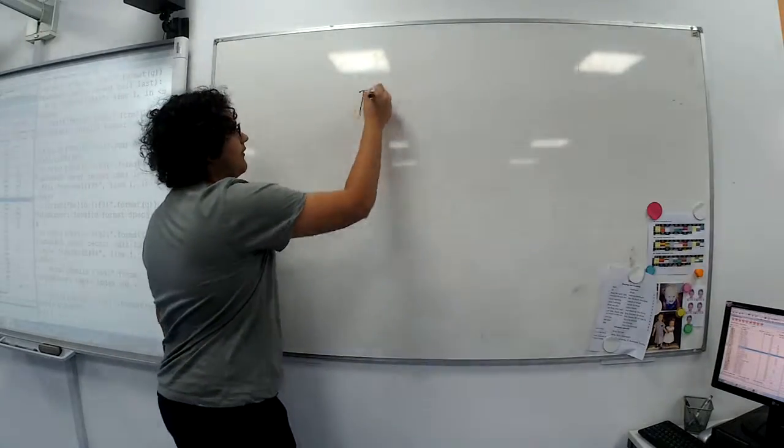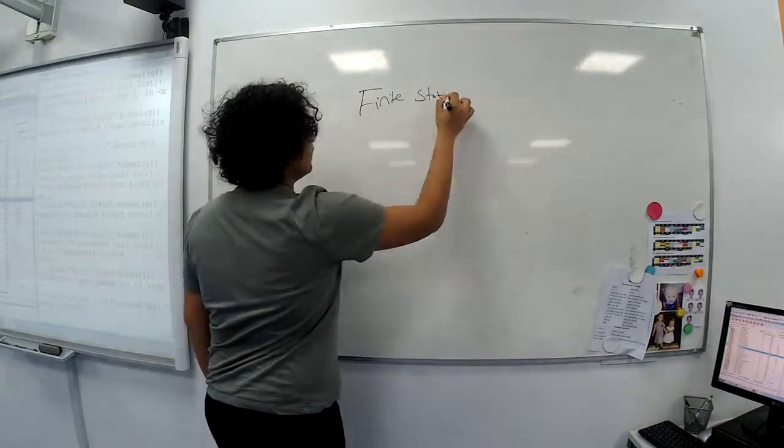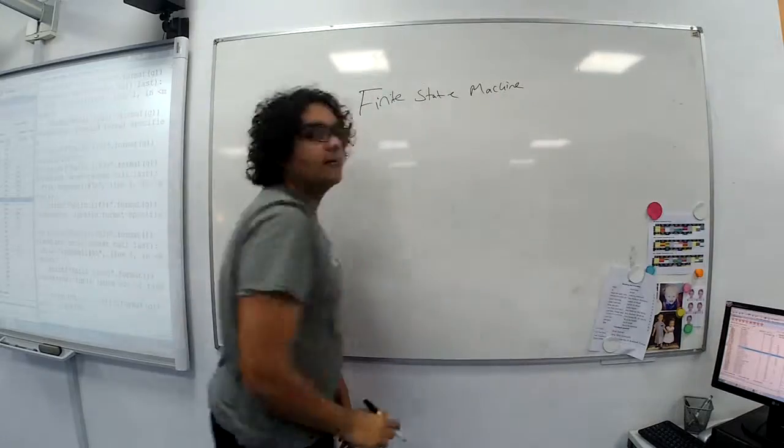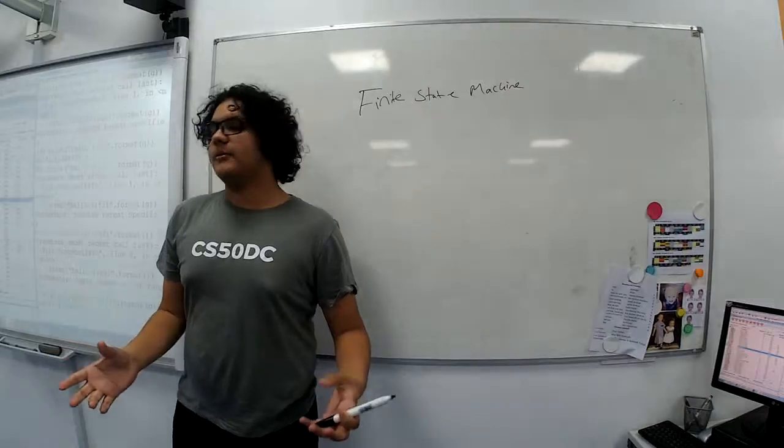So we're going to be talking about finite state machines. A finite state machine is a machine that has a finite number of states, and it's a way of modeling systems in computer science.